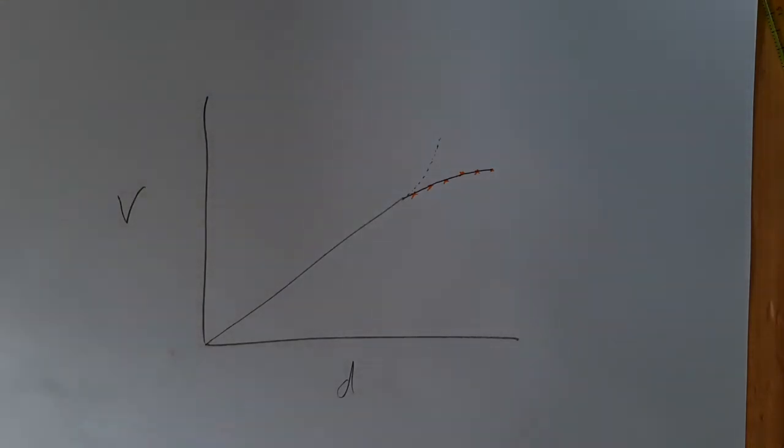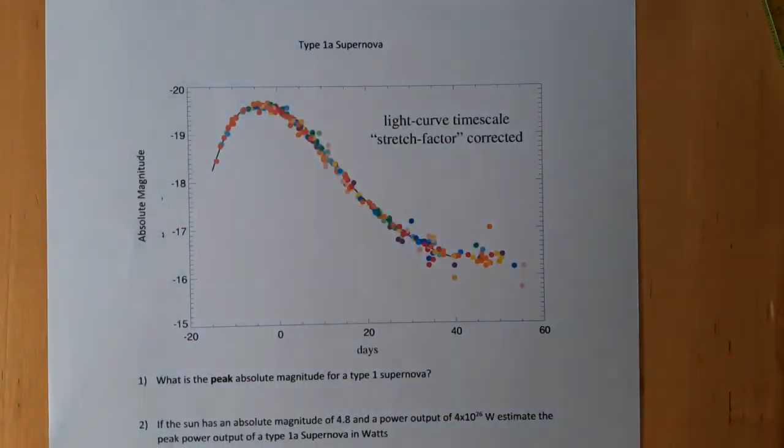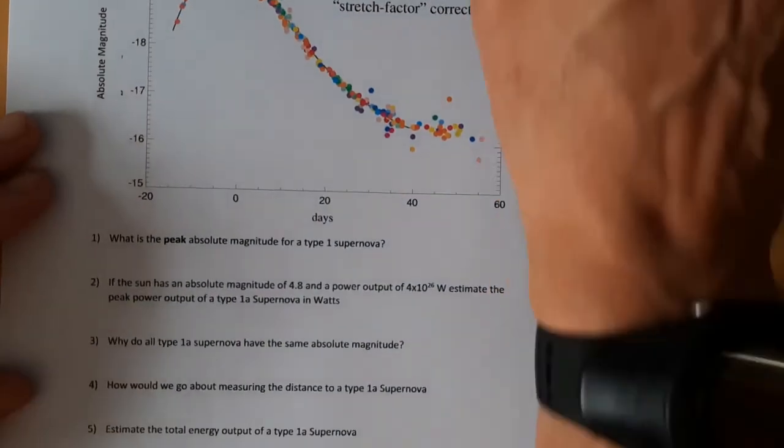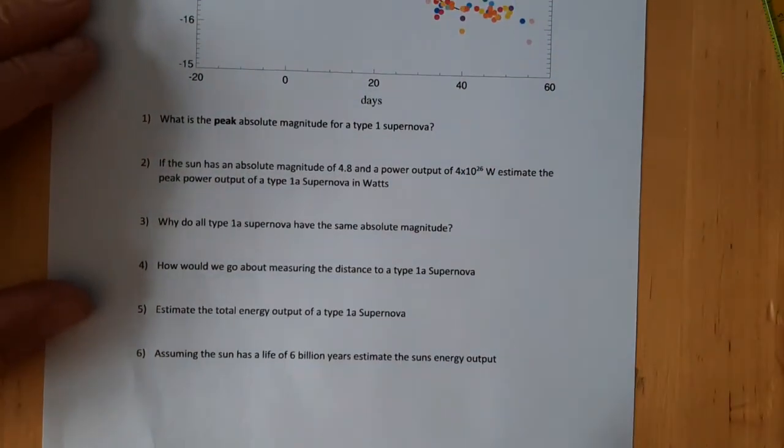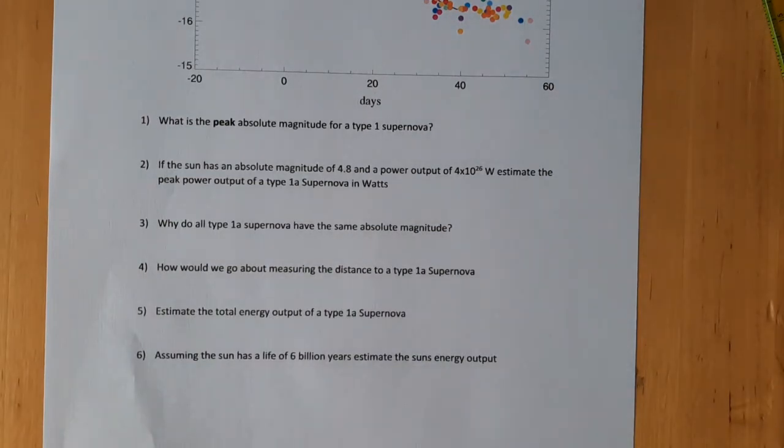What I'm going to do now is I'm going to work through a worksheet about type 1a supernova. There's the graph at the top, here are the questions. I think you should be able to do this without any help from me. My suggestion is you've been listening to me for quite a long time, so stop the video, have a go at the worksheet, and then come back to it.